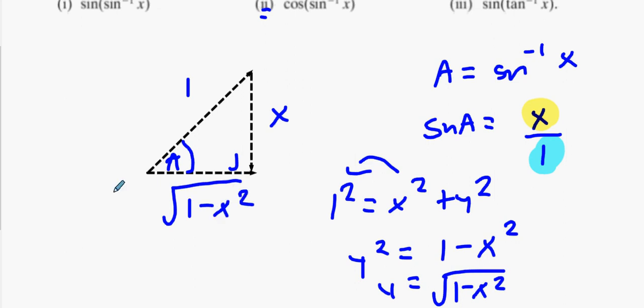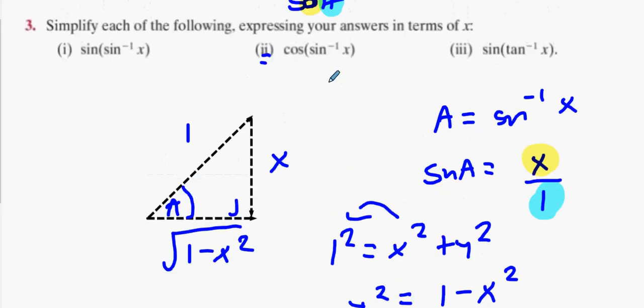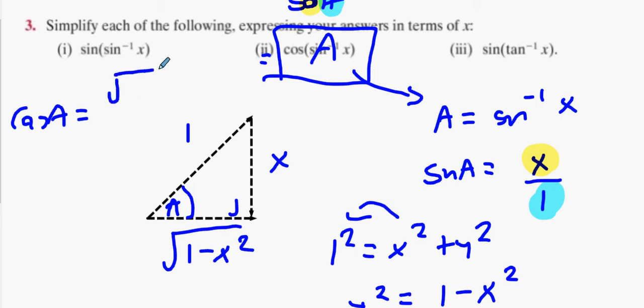Do you remember at the very start of the question I said let A equal sine inverse X? Yeah? And then the question becomes what is cos A? Well, what is cos A? It's adjacent divided by hypotenuse. So what's adjacent? Divided by hypotenuse. And that's your answer. Guys, do try part three on your own. Okay? You're going to need to do one of them.